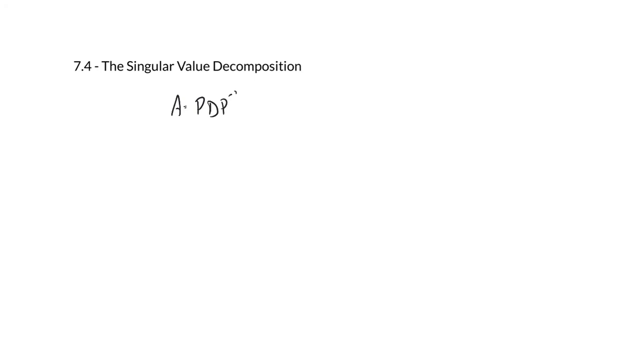Hi everyone. In this video we are going to cover section 7.4, the Singular Value Decomposition, or SVD for short. The section starts out with a brief summary that not all matrices can be factored in the form A equals PDP inverse, where D is diagonal. We saw that in chapter five.